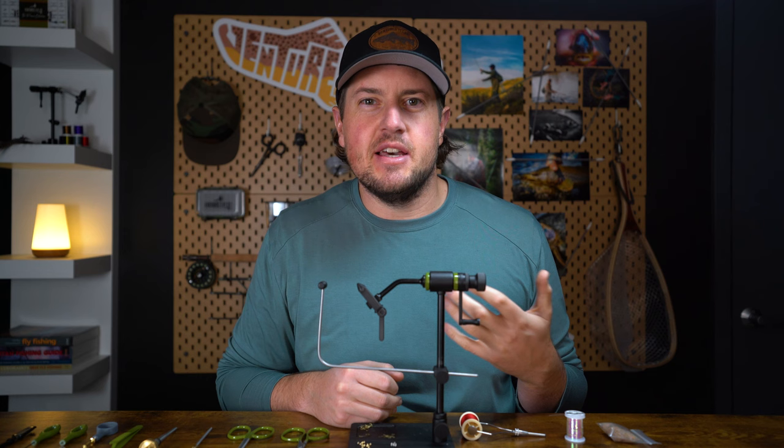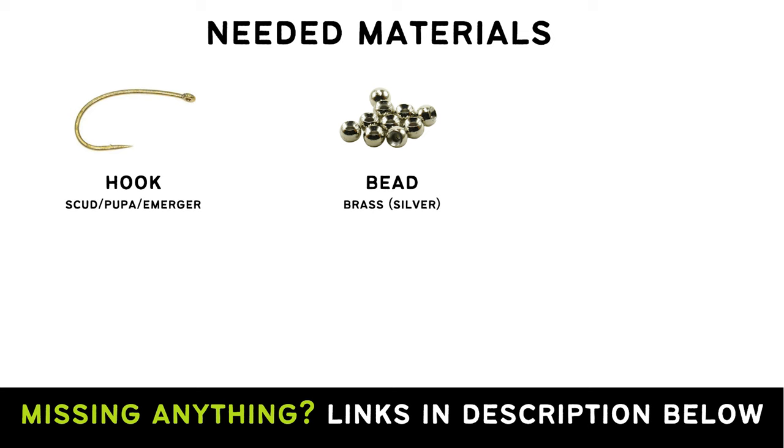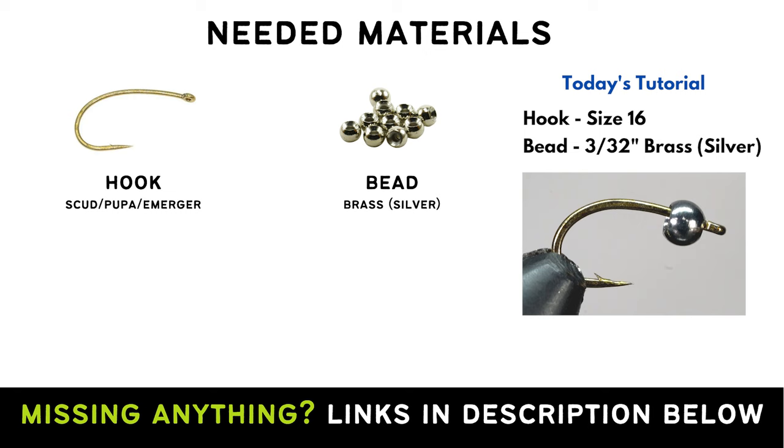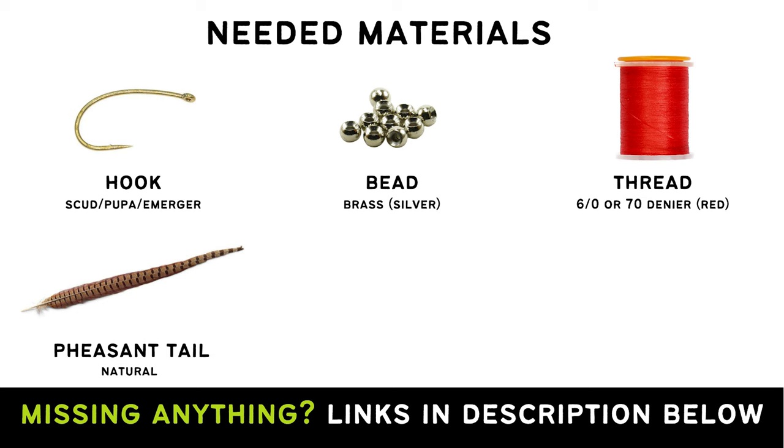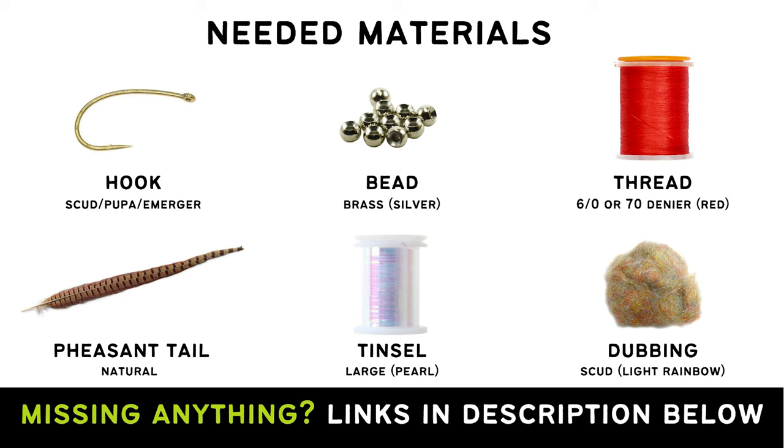But it does seem to work well on waterways with scuds, sow bugs, and midges. To tie this pattern, you'll need a scud pupa emerger hook and brass bead. Today I'm using a size 16 hook and a 3/32 inch bead in silver, some 6-aught tying thread in red, a few pheasant tail fibers, some large pearl tinsel, and some light rainbow scud dubbing. Alright, gather up your materials, let's get tying.